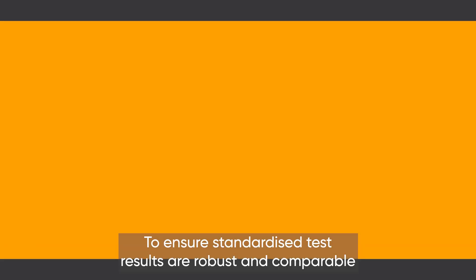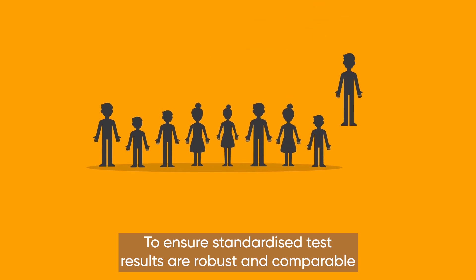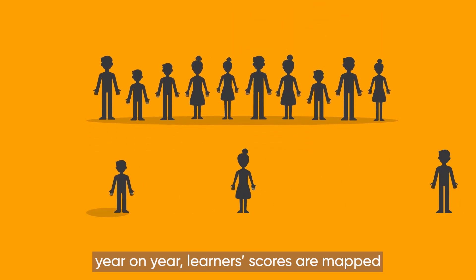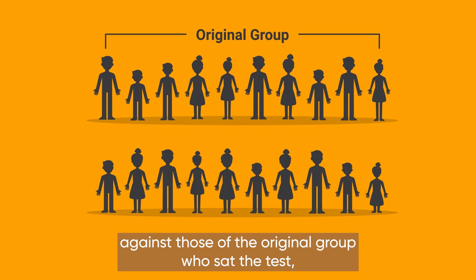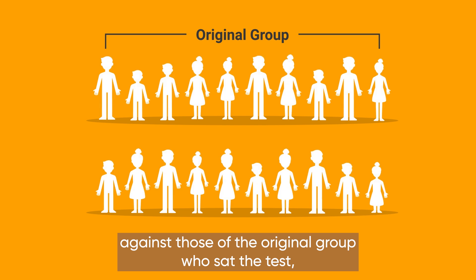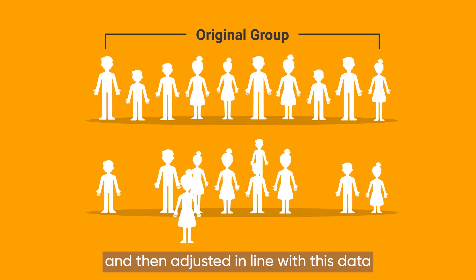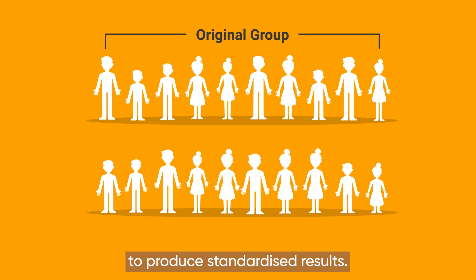To ensure standardised test results are robust and comparable year on year, learners' scores are mapped against those of the original group who sat the test and then adjusted, in line with this data, to produce standardised results.